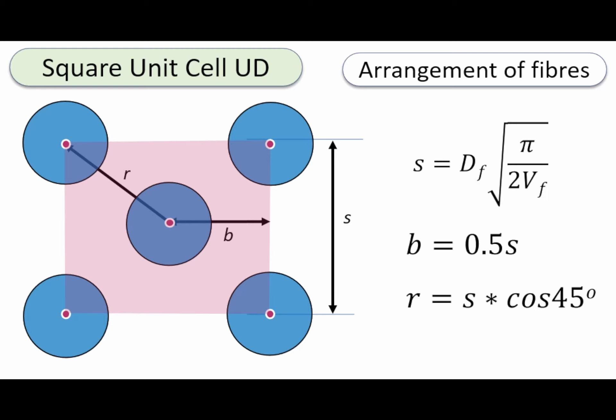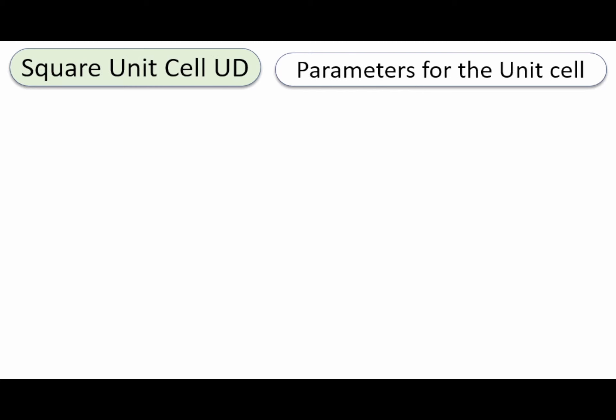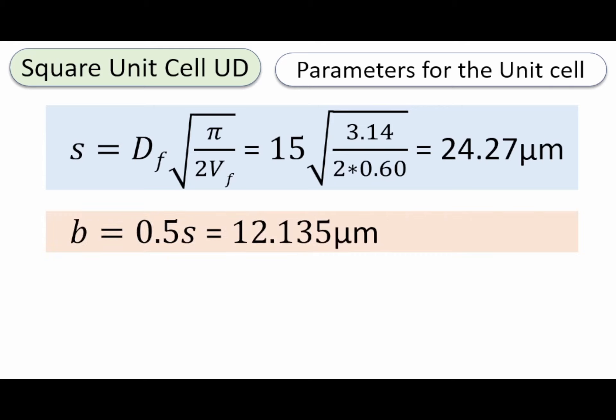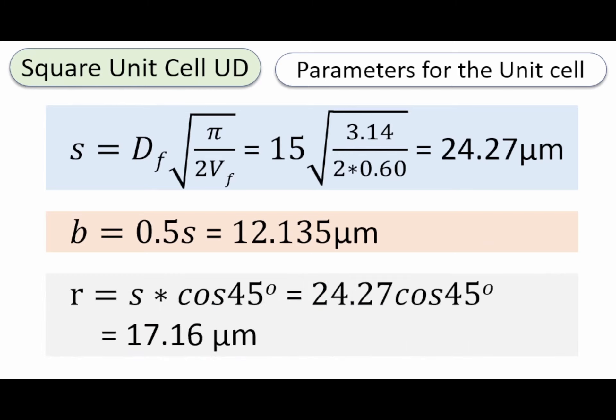This becomes a picture of our square arrangement of fiber. Putting some numbers to that: for a fiber diameter of 15 microns and a volume fraction of 60% (0.60), we have an edge length s of 24.27 microns. The distance from center to edge is half of that, which is 12.135 microns, and the R value is 17.16 microns.